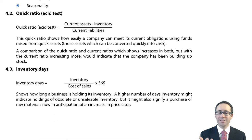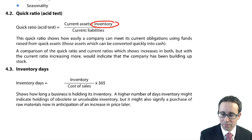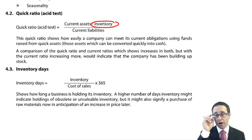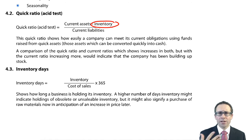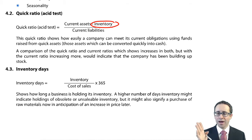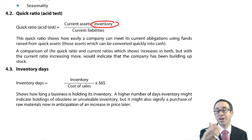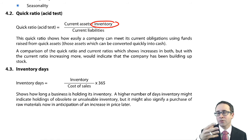You've then got the quick ratio, or acid test, which is a slightly better measurement of liquidity because it removes the least liquid asset — inventory. If there's a reduction in the quick ratio, that could bring about potential liquidity concerns. A good thing to do is compare the quick ratio and the current ratio. If there's a bigger increase in the current ratio than in the quick ratio, that means stock levels are increasing, because the current ratio must be increasing due to stock being incorporated, while the remaining current assets and liabilities are the same.